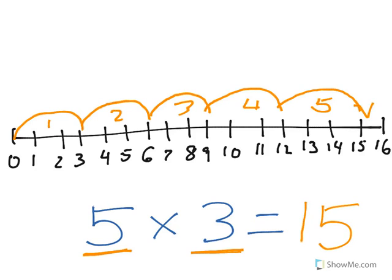That is how you can use a number line to help you solve a multiplication problem. Just remember that the first factor — the first number in the problem — is how many groups or how many jumps you're going to make. The second factor is going to be how many pieces are in each one of those jumps.